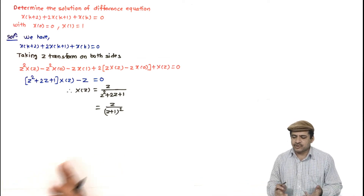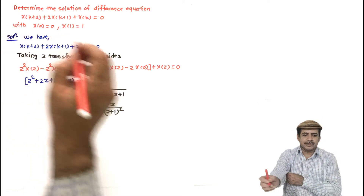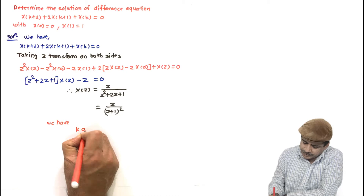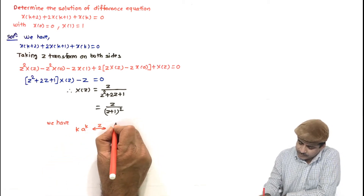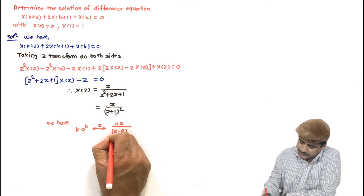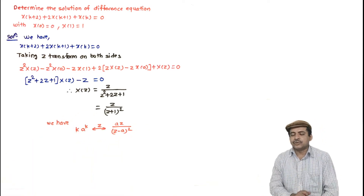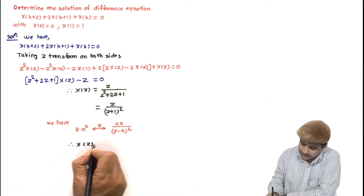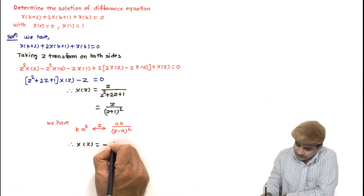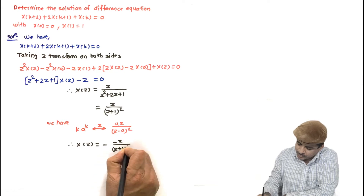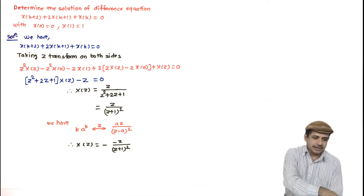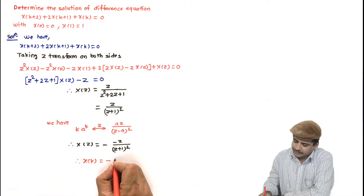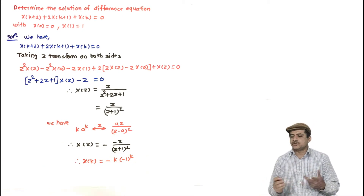There is no need to go for X(z)/z here because it is already in a standard form. We know that the Z transform of k·aᵏ is a·z / (z−a)². Rearranging, X(z) = −(−1)·z / (z−(−1))², so a = −1. Taking the inverse Z transform, the solution is x(k) = −k·(−1)ᵏ. This is the solution. Note the key feature here was the repeated root.